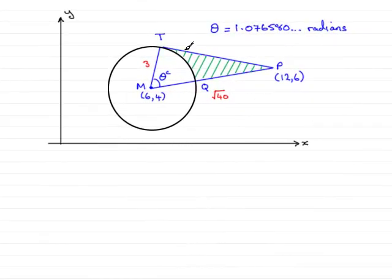Now, in this next part of the question, what we've got to do is find the shaded area that I've got here, TPQ. And what I've done is I've just copied down from earlier that the angle theta here was 1.076580 radians. Notice I haven't rounded this up. If we round it up, we're possibly going to have rounding errors. Also, I've marked in the length of MP, which we worked out earlier as the square root of 40.